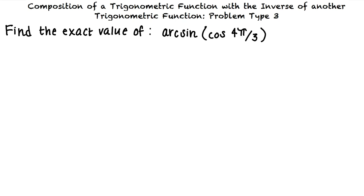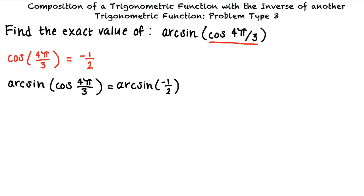A problem of this type might ask us to find the exact value of the inverse sine of the cosine of 4π/3, and to write our answer in radians in terms of pi. We will begin this problem by determining what the cosine of 4π/3 is equal to. This results in negative 1/2. So now we have the inverse sine of cosine of 4π/3 equals the inverse sine of negative 1/2.